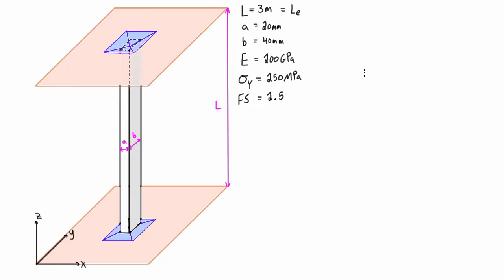The next thing is to use Euler's buckling formula. We're looking for the critical load — the load at which the column has a tendency to buckle. That is P_crit = π²EI / Le², where Le is the effective length. We need to figure out the moment of inertia.